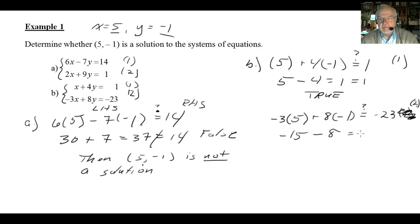And they're both negative, so they'll end up being negative. 8 and 15 is 23. Aha! Minus 23 is equal to minus 23. This equation now is also true. Therefore, (5, -1) is a solution.